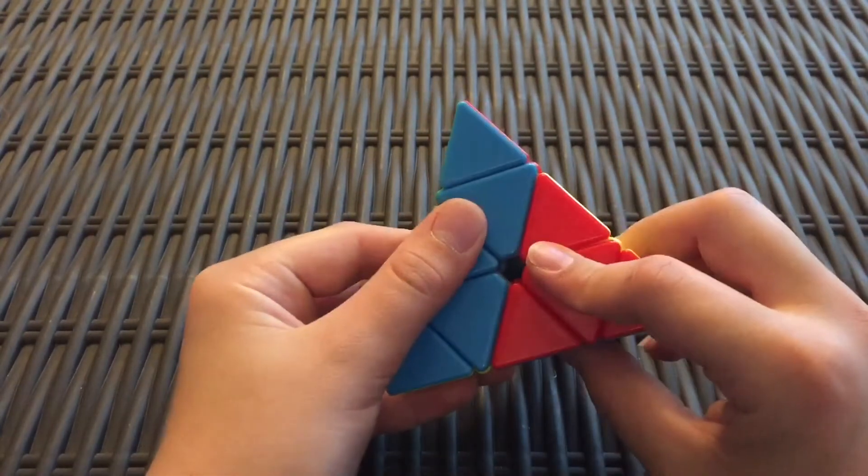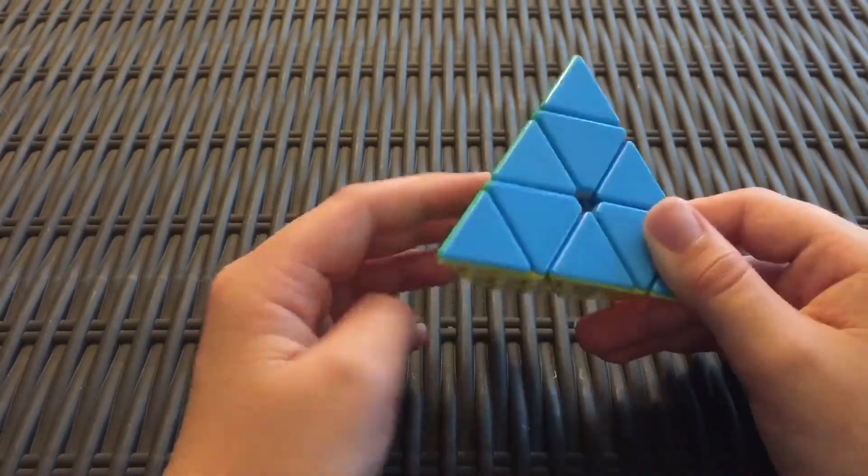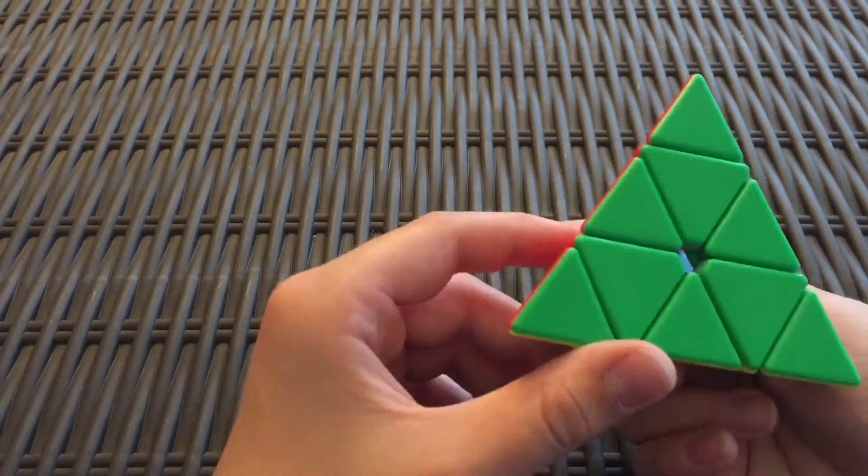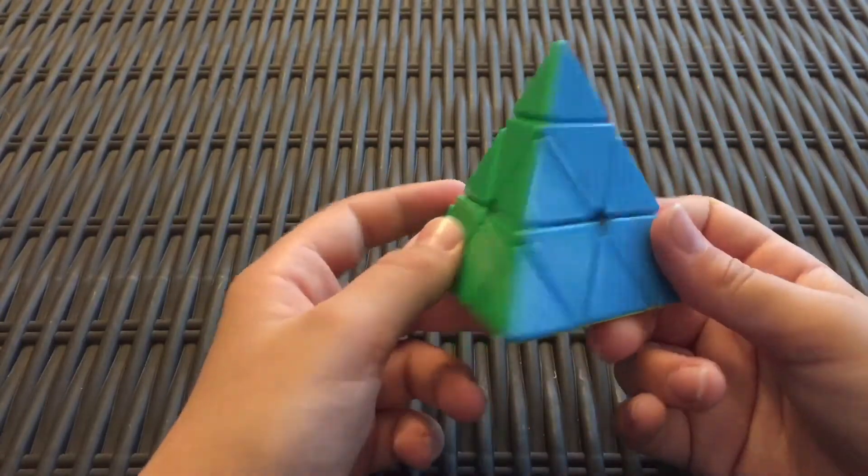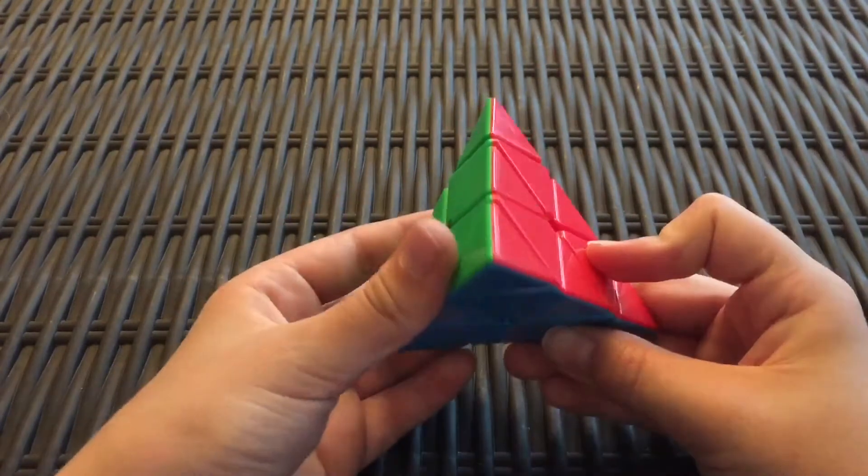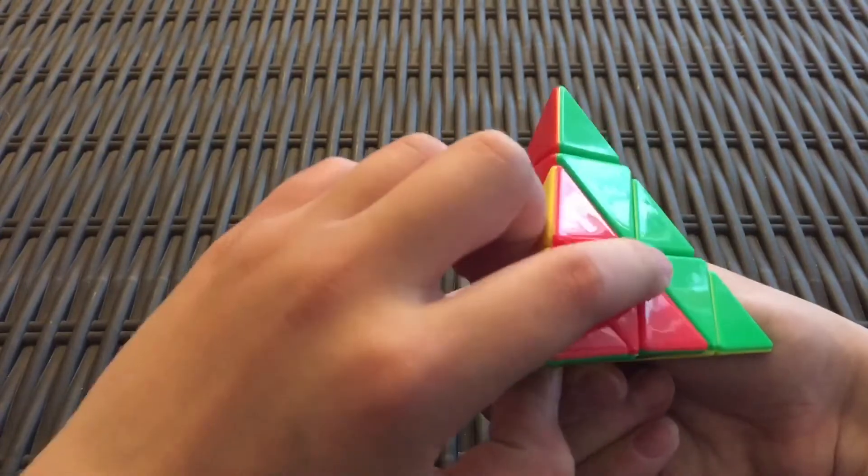R, R prime. And remember, you're doing this as if you were looking at the corner straight on. So when you're turning B, it would be like this, not like this. It's not as if you were looking at the face when you're turning it clockwise, but as if you were looking at the corner straight on.